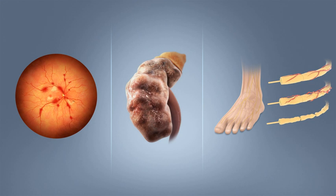Gestational diabetes mellitus resembles type 2 DM in several respects, involving a combination of relatively inadequate insulin secretion and responsiveness. It occurs in about 2-10% of all pregnancies and may improve or disappear after delivery. However, after pregnancy approximately 5-10% of women with GDM are found to have DM, most commonly type 2. GDM is fully treatable, but requires careful medical supervision throughout the pregnancy. Management may include dietary changes, blood glucose monitoring, and in some cases insulin may be required, though it may be transient.